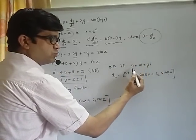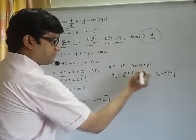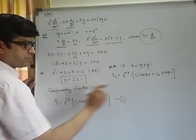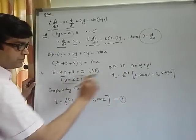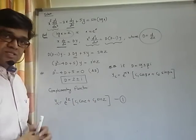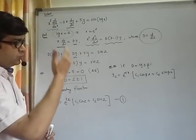I hope you understand. If the roots are alpha plus or minus beta i, here alpha is 2 and beta is 1. In place of alpha you see 2, in place of beta you see 1. This is the complementary function. Next, we have to find out particular integral.